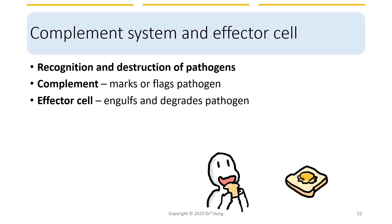Other key components of the innate immune system are the complement system and its effector cells. Their function is to recognize and destroy pathogens. In brief, complement marks or flags the pathogens, and the effector cells engulf and degrade pathogens. We will discuss all these systems in much greater detail in later lectures.